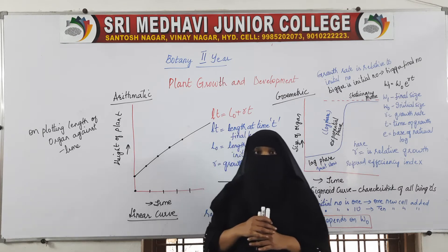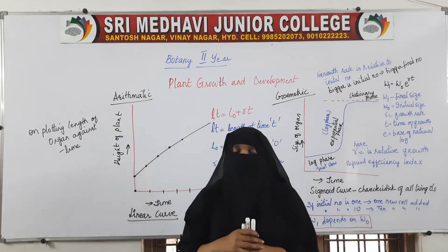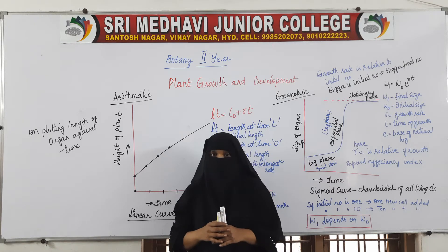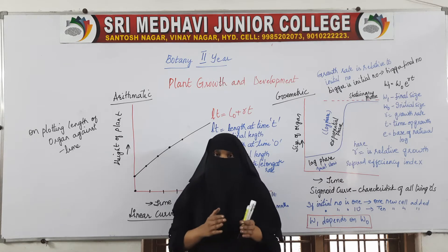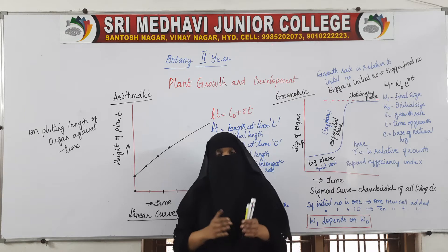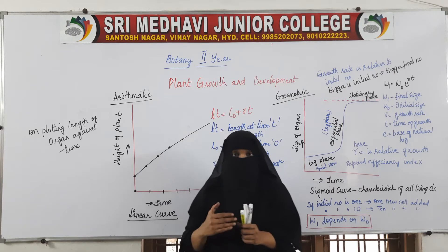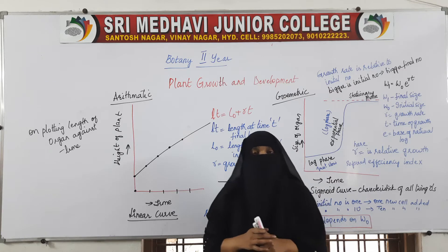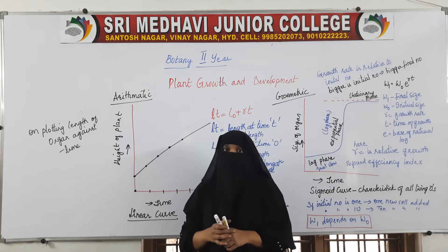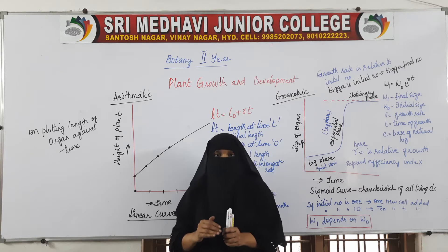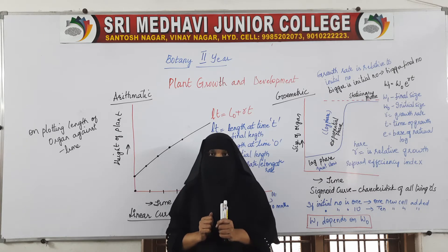In arithmetic growth rate, every time when a cell divides, it produces two progeny. Out of those two progenies, one will be meristematic — which has the ability to further divide — and one will lose the ability to divide and become permanent. So the growth rate is constant at regular time intervals.